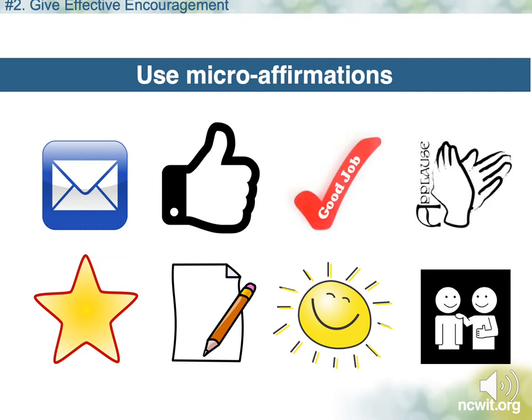Another way to provide effective encouragement is to use micro affirmations — these seemingly tiny gestures of inclusion, caring, listening, and encouragement can have a big impact. When a student does a good job on an assignment, drop them an email letting them know you noticed. If you think a student is doing well and would be a good computing major, let them know — especially if they're from a group that isn't well represented in computing. But remember, communicate without falling back on stereotypes or by highlighting a student's group membership. Just focus on what that individual student accomplished.